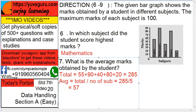55, then 90, then 40, then 80, then 20. Total is 285. Number of subjects is 5. So 285 divided by 5 equals 57.